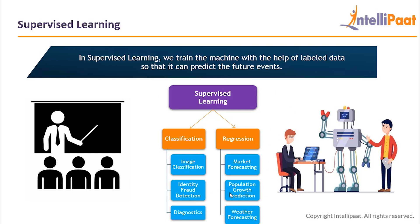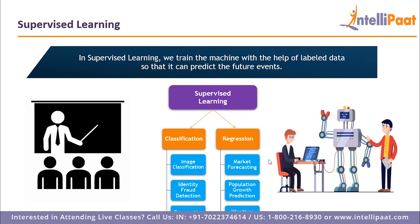In supervised learning there are two categories. The first is regression problems, where we predict continuous or numerical variables. Examples include predicting stock prices, product prices, population growth based on various factors, and weather variables like temperature, humidity, or precipitation — all based on patterns learned from previous data. Since we are predicting a numerical output, these are called regression problems.